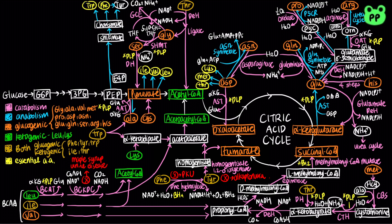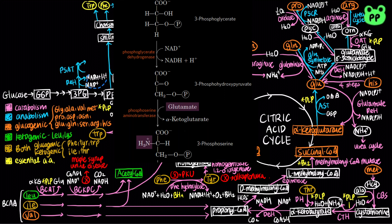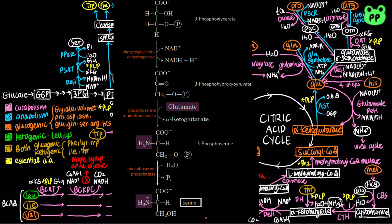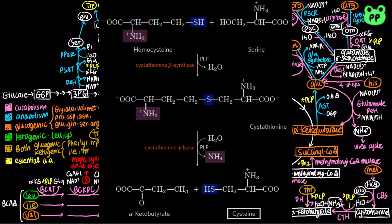In all organisms, serine, cysteine, and glycine can be synthesized from 3-phosphoglycerate. First, 3-phosphoglycerate is oxidized to 3-phosphohydroxypyruvate by phosphoglycerate dehydrogenase, coupled to the reduction of NAD+ to NADH. 3-Phosphohydroxypyruvate then undergoes a transamination reaction by phosphoserine aminotransferase, abbreviated as PSAT, to form 3-phosphoserine, which is subsequently hydrolyzed to serine by phosphoserine phosphatase. Serine can be converted to glycine by serine hydroxymethyltransferase, abbreviated as SHMT, which is the reverse reaction of glycine metabolism, involving the cofactor tetrahydrofolate. In mammals, serine can then be converted to cysteine by cystathionine beta-synthase and cystathionine gamma-lyase, which are part of the catabolic pathway of methionine to succinyl-CoA.